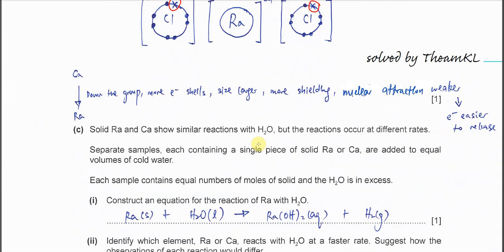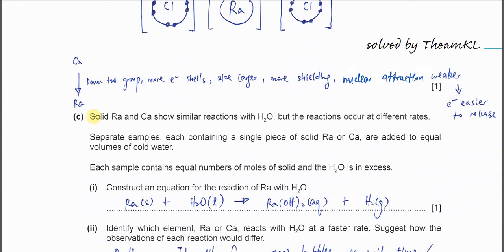Part C. The general view is this: when down the group from calcium to radium or magnesium to radium, more electron shells are involved. Means when down the group, more electron shells with the elements. We know that size is larger. When size is larger or more electron shells, it's going to have more shielding.